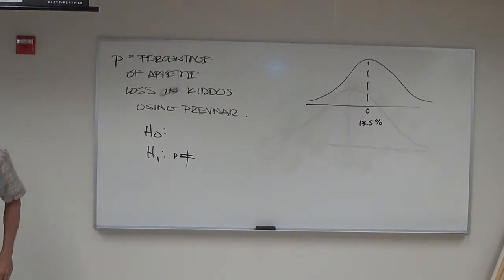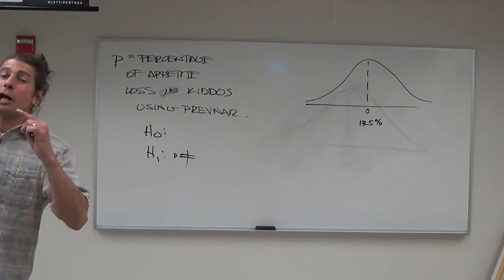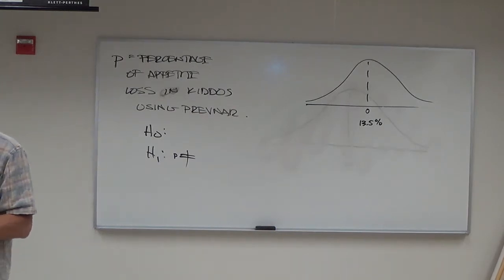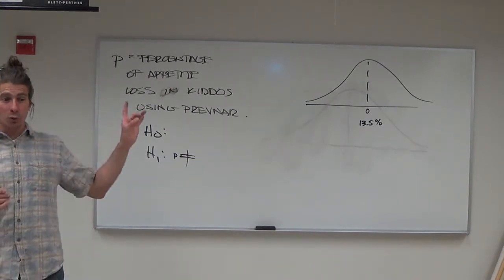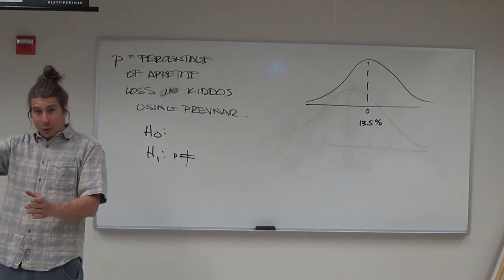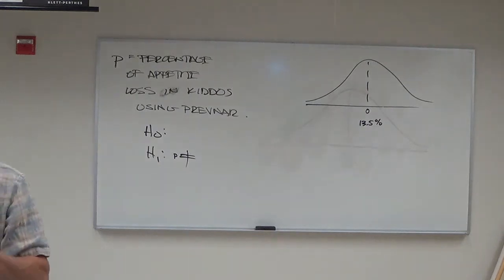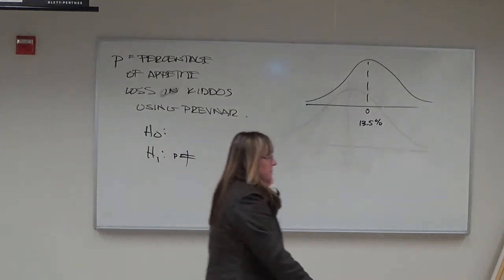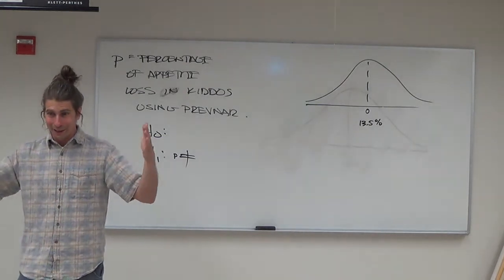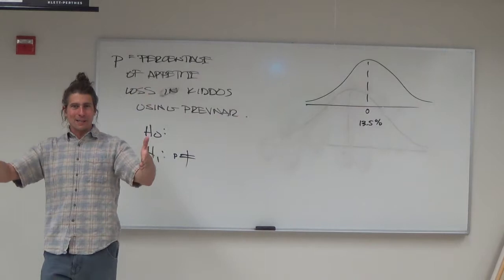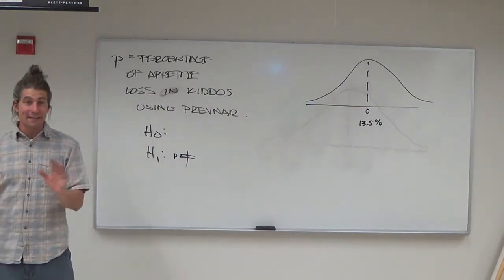A student asks what makes this different from the last problem. The instructor explains that in the previous flu vaccine case, they were trying to show they lowered flu rates - the key was "lowered." Here they're just trying to see if they're different. The context determines whether to use a two-tailed test. Many statisticians only run two-tailed tests because they don't like presupposed notions - they just want to see if something changed.